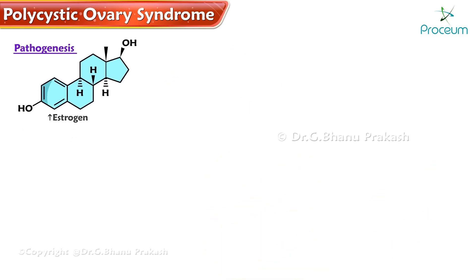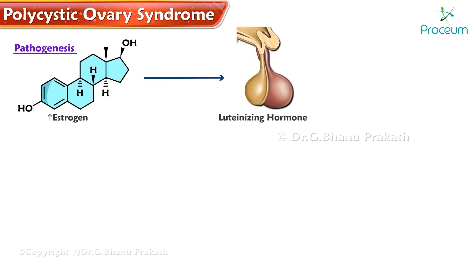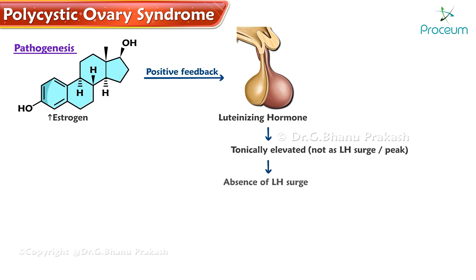The same excess estrogen causes a release of luteinizing hormone from the pituitary. Estrogen has positive feedback for luteinizing hormone. This luteinizing hormone is tonically elevated, and not as a luteinizing hormone surge or peak. As a result of the absence of the luteinizing hormone surge, there is no ovulation. Anovulation is a rule in polycystic ovary syndrome.